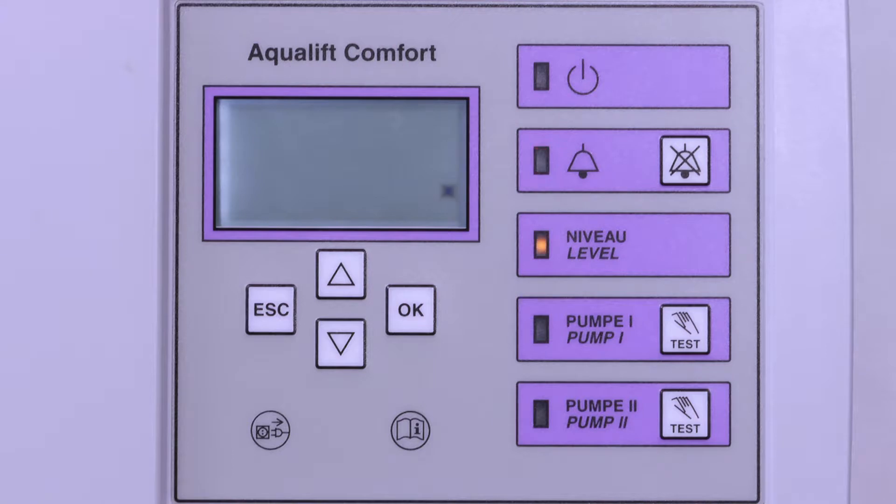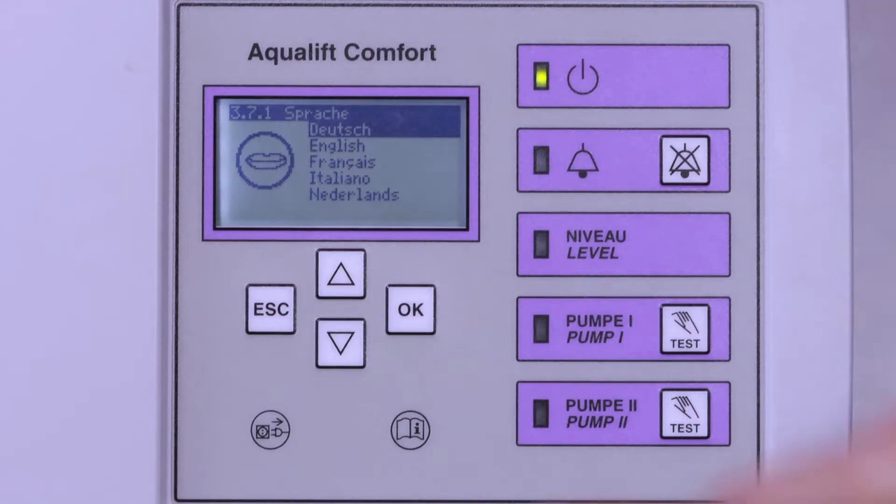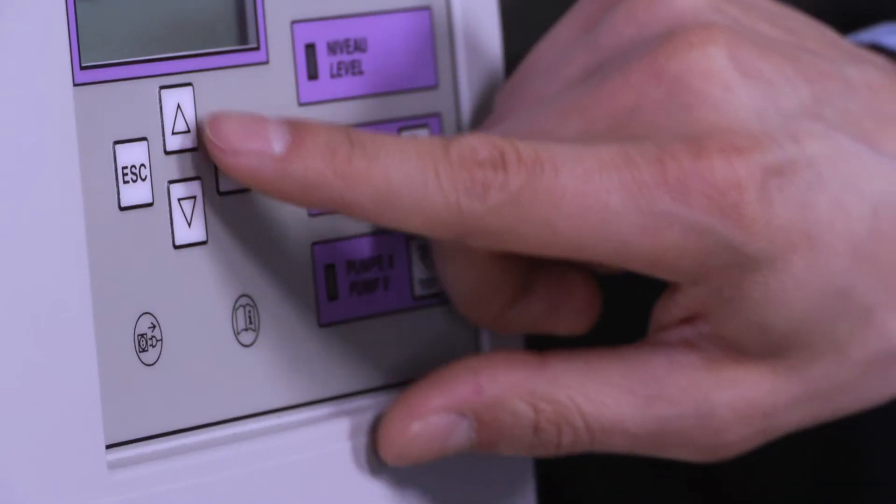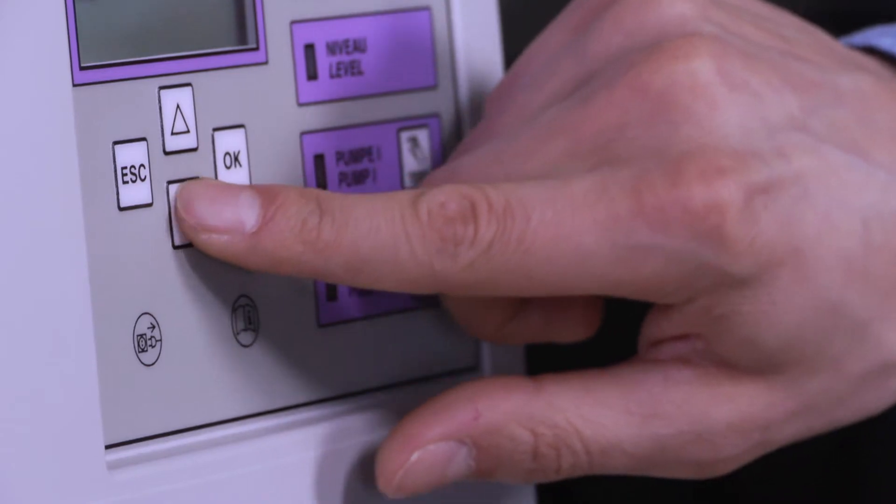Now you can apply voltage to the control unit. After the following initialization, the language menu appears. Use the arrow keys to select each menu item and then confirm with OK.